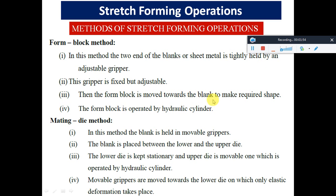The form block is moved towards the blank to make the required shape, and the form block is operated by a hydraulic cylinder. These are the components involved in the form block method.